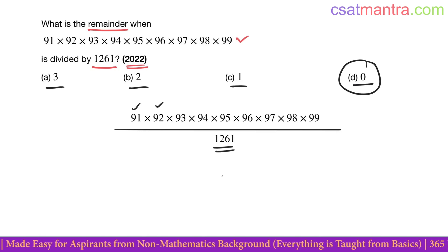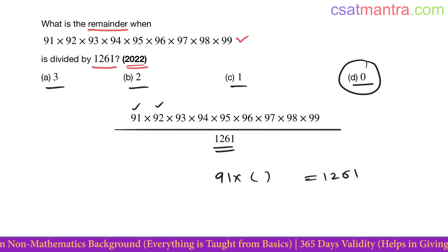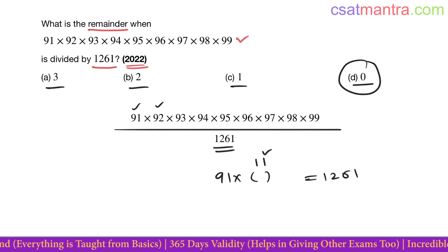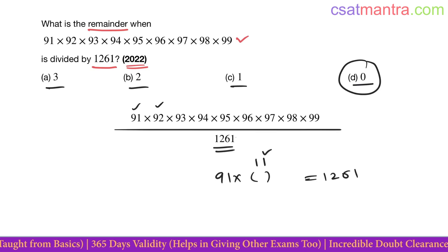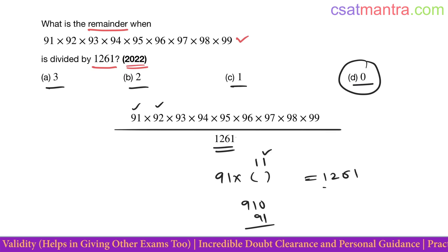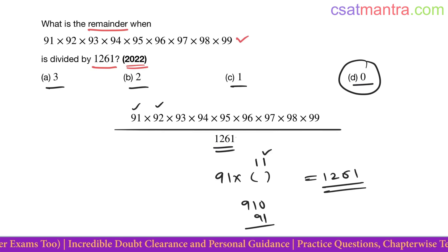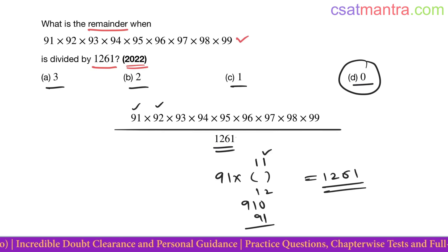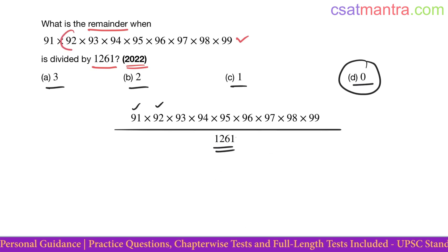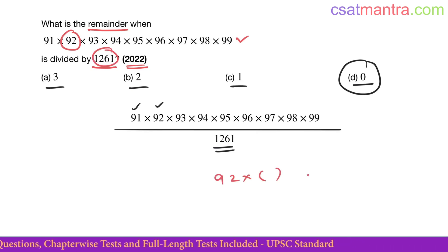So, 91 into something — is it possible? 1261 needs to have the last digit as 1, so only a factor ending in 1 works. 91 × 11 is not 1261. 91 × 12: last digit would be 2. 91 × 13: last digit would be 3. So 91 is not possible. 92 is an even number whereas 1261 is odd, so 92 into something would give an even number.